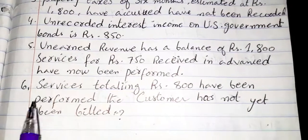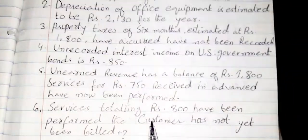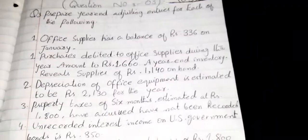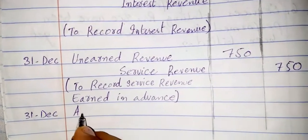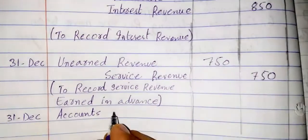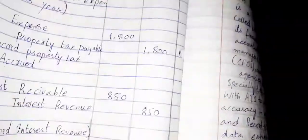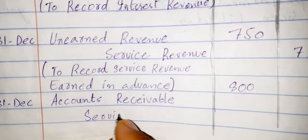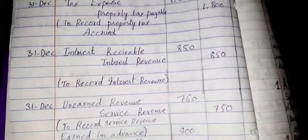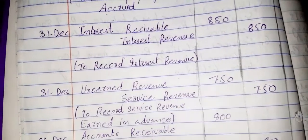Sixth entry: service totaling rupees 800 have been performed but the customer has not yet been billed. We have given our service but the customer has not paid, so this is an accrued entry. Date 31st December, we debit accounts receivable 800, and credit service revenue 800. Narration: 'to record accrued service revenue.'